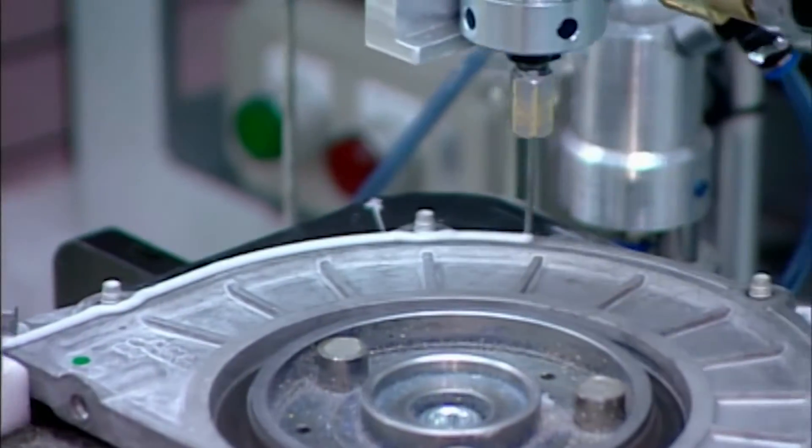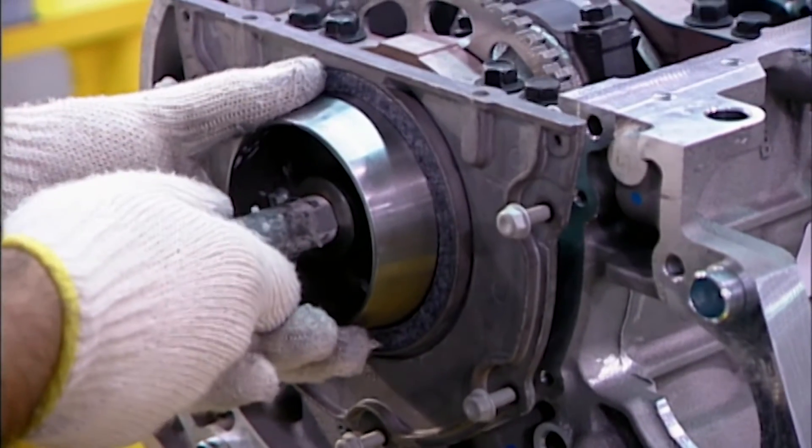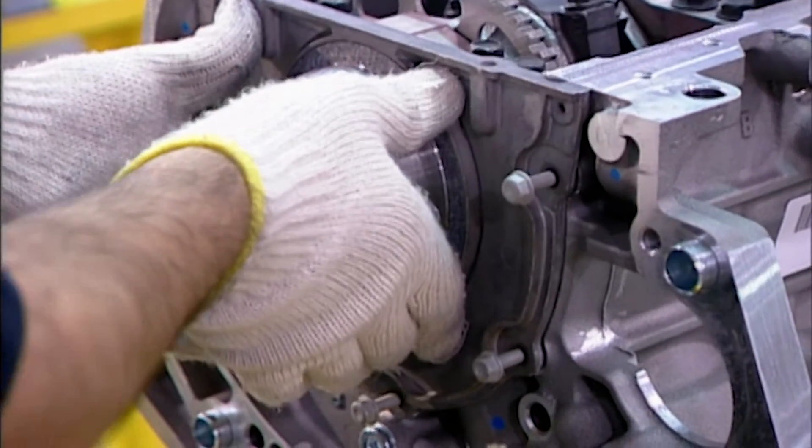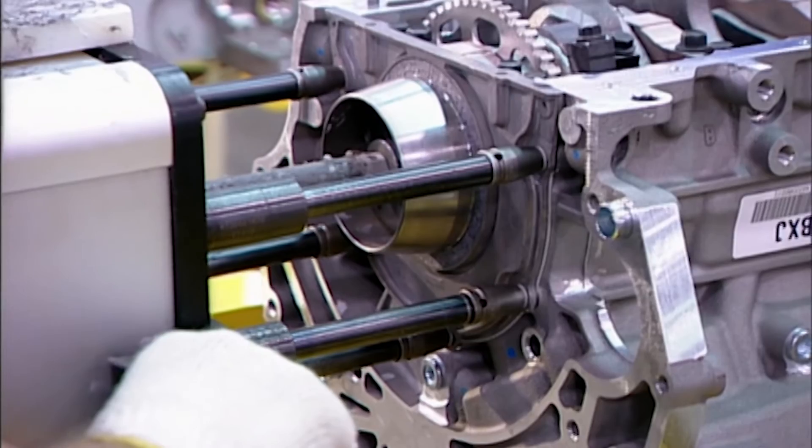Now workers can close up the back of the engine block. A robot applies sealant to the rear cover. Workers bolt it on manually with a tool called a multi-spindle torque gun.